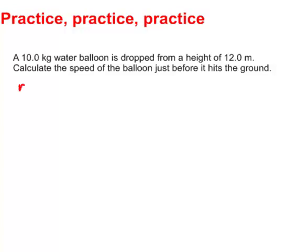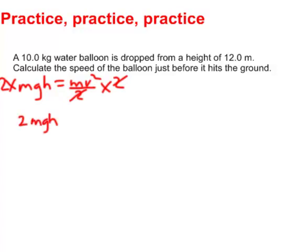Let's start with the equation that says the gravitational potential energy, MGH, is equal to the kinetic energy, which is mass times velocity squared divided by two. I want to try and get this isolated for velocity. I'm going to multiply both sides by two because that will eliminate the divide by two. So now I get two times MGH is equal to mass times velocity squared.